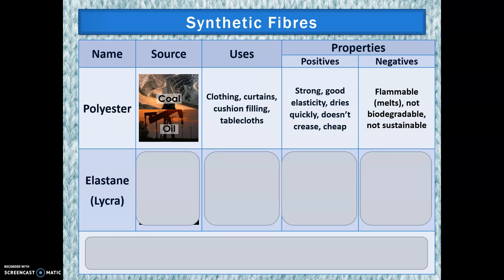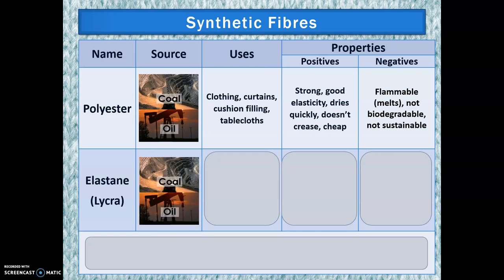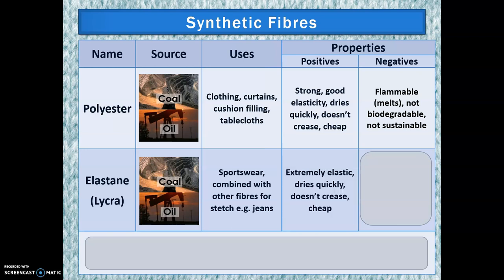Next we have elastane, also known as Lycra, which also comes from petroleum sources. It's used for sportswear and combined with other fibres for stretchy jeans. It's extremely elastic, dries quickly, doesn't crease, and is cheap. However, it has the same issues as polyester — it's not biodegradable and not sustainable.